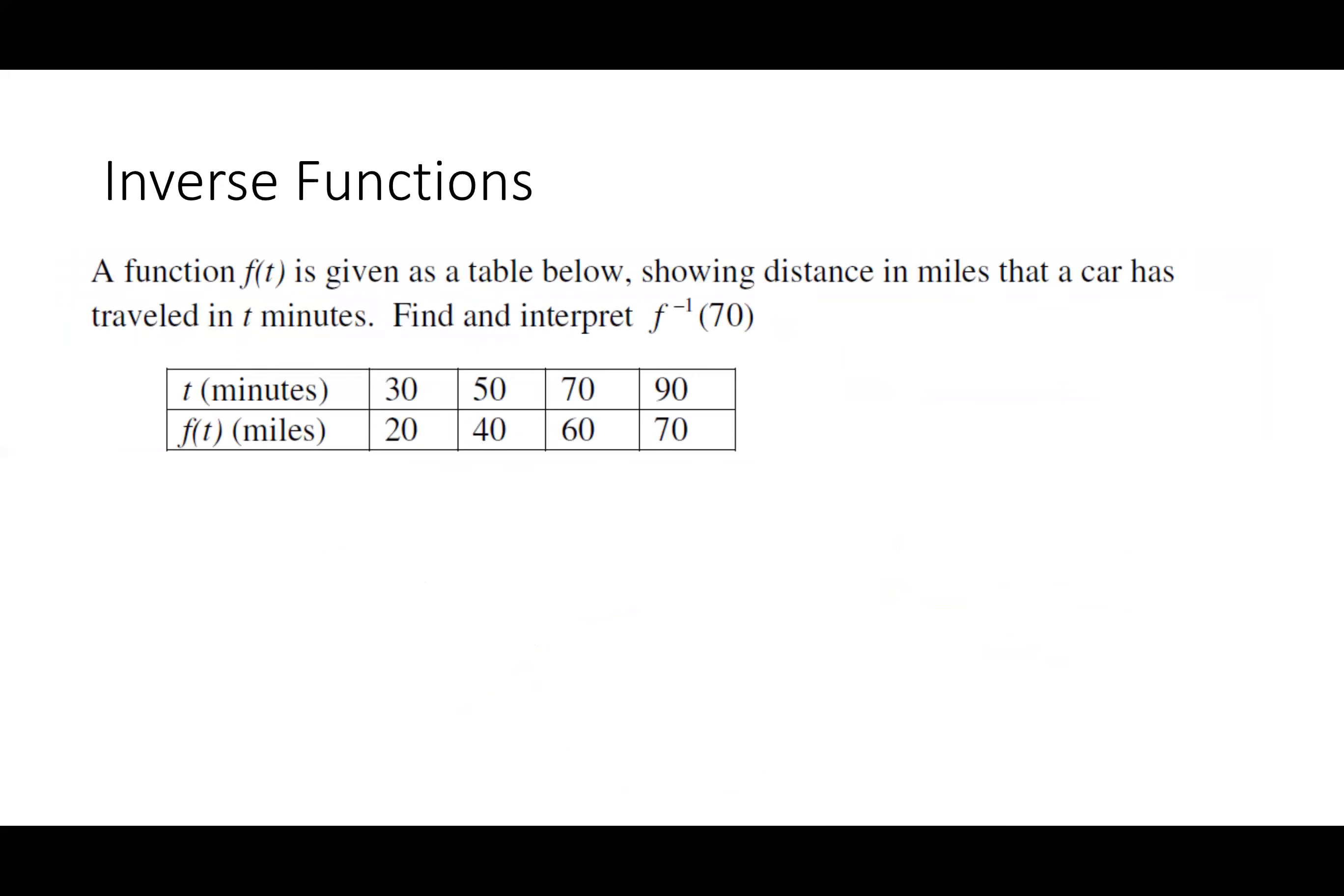So let's start with just kind of an intuitive way to think about an inverse. Suppose I had some function F of T, where if you told me the number of minutes that you've driven, I would tell you, my output, the number of miles you had driven in that time. What does F inverse of 70 mean? So what we would do is we could think about this as domain and range. We would take A, our number of minutes driven, and map it to our range value, which is B, the number of miles driven. So F inverse of A is going to be equal to B.